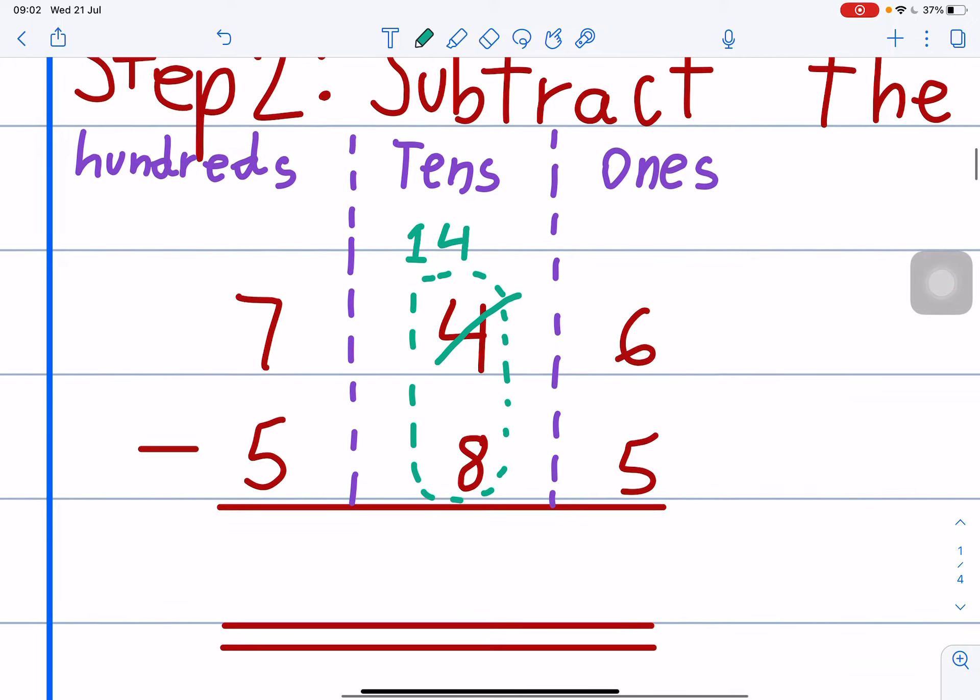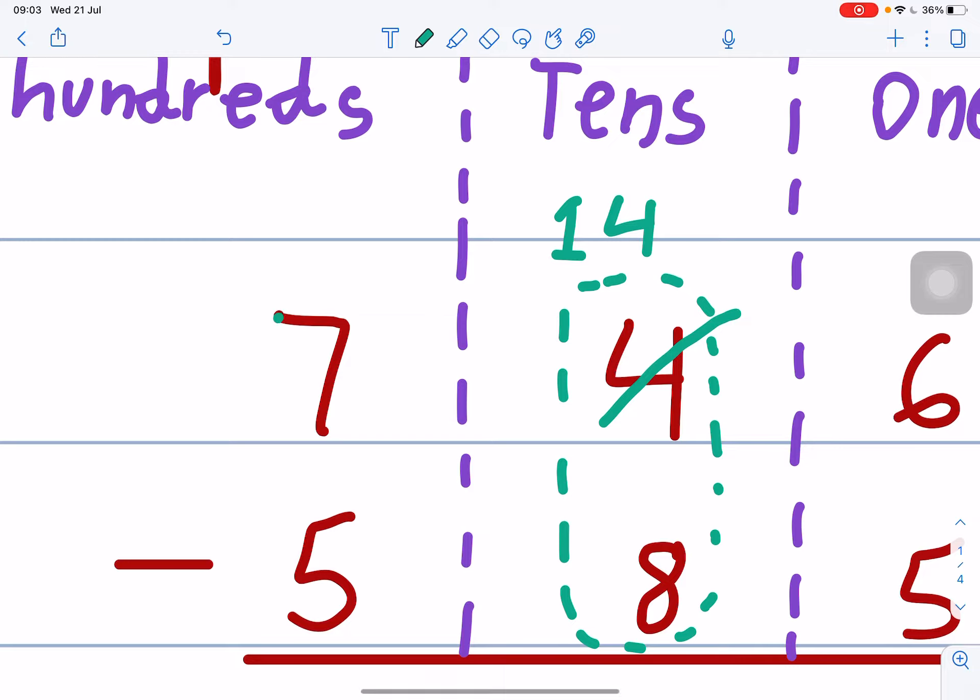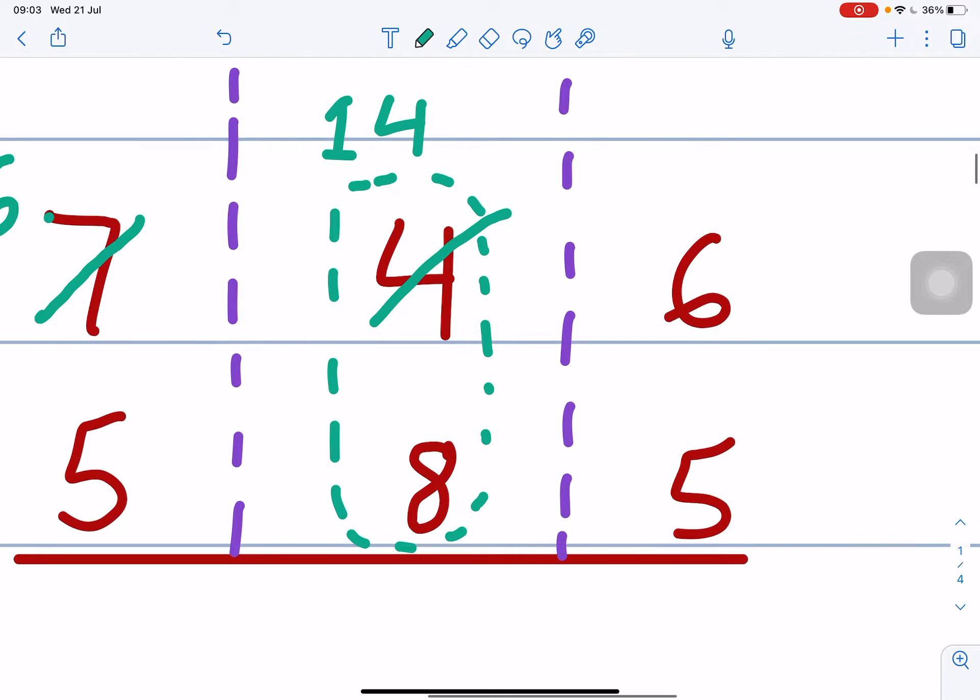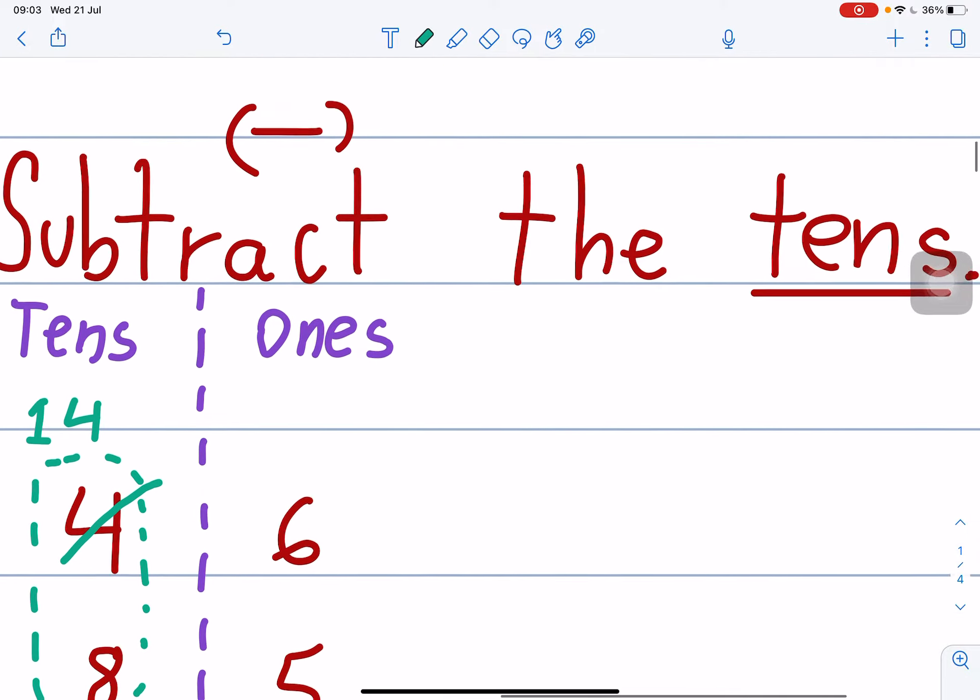But, and here in the hundreds here, number 7, hundreds. Number 7, you cut and you do minus 1. 7 minus 1 is 6. Okay, let's finish. Subtract the tens.